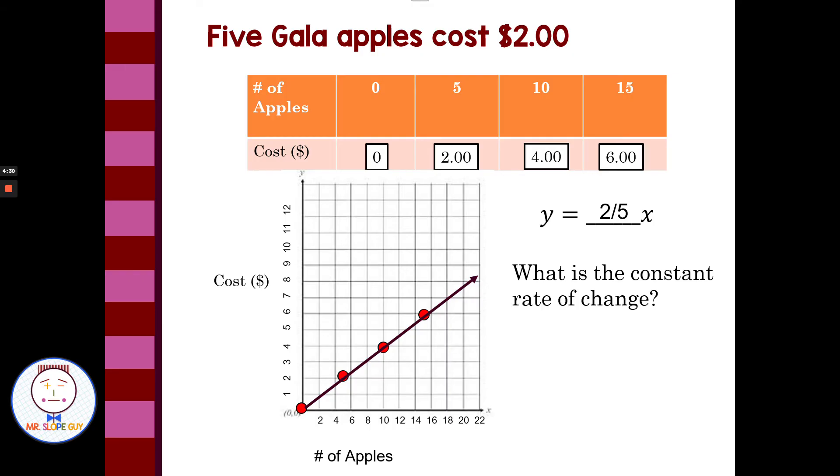What is the constant rate of change? Well, the constant rate of change is this two-fifths. Or if I put it in my calculator, two divided by five, I get 40 cents, or 0.4. If I think about my two dollars for five apples, two dollars for five apples means 40 cents per apple. So my constant rate of change, my slope, my unit rate, how much for one apple, is 40 cents.